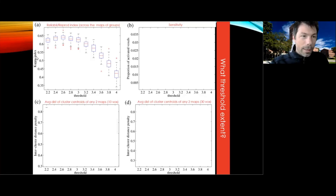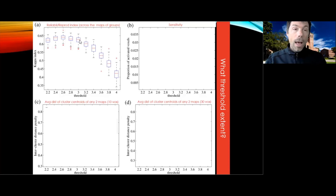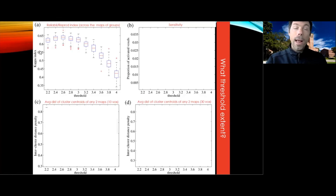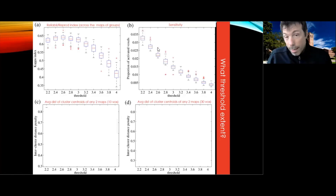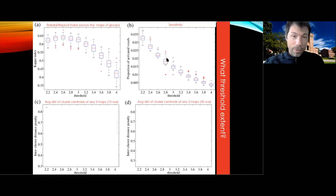We want the kappa index to be as high as possible, suggesting you'd want to be somewhere around z = 2.6 to 3. The way they produced these numbers was by creating five different groups of 16 subjects and applying all these different thresholds to calculate reliability. Sensitivity is a decreasing function of threshold — the higher the threshold, the more stringent the correction, and of course the more false negatives you're going to have. This comes out as a fairly straight downward function, which makes good sense.